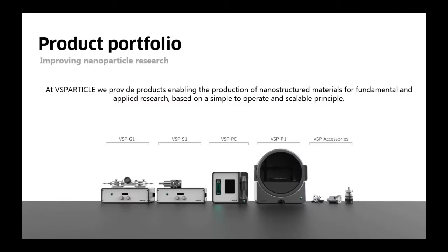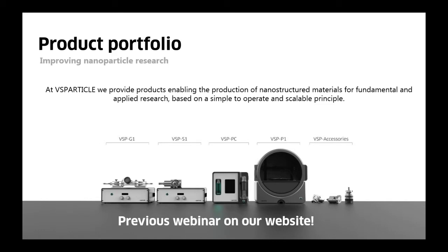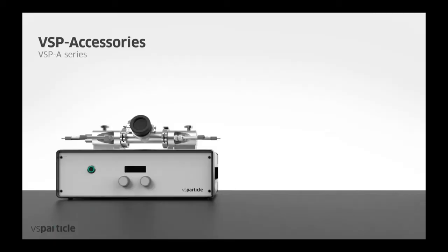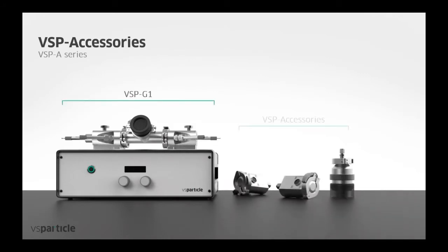At VS Particle we believe that products enabling the production of nanostructured materials for both fundamental and applied research should all be based on a simple, easy to operate, and scalable principle. Here you can see the entire product portfolio that we currently have, which was already introduced in our previous webinar available on our website. Today I would like to talk specifically about the VSP G1 and the VSP A series accessories — I will walk you through each product and then forward you to my colleague Wilbert for a hands-on introduction in the virtual lab.